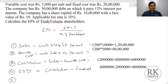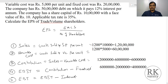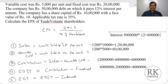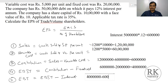Next, calculate Earnings Before Tax. Earnings Before Tax equals EBIT minus interest. This company borrowed 50 lakhs of debt at 12% interest, so interest is 50 lakhs times 12%, which is 6 lakhs. Therefore, EBT is 40 lakhs minus 6 lakhs, which equals 34 lakhs.